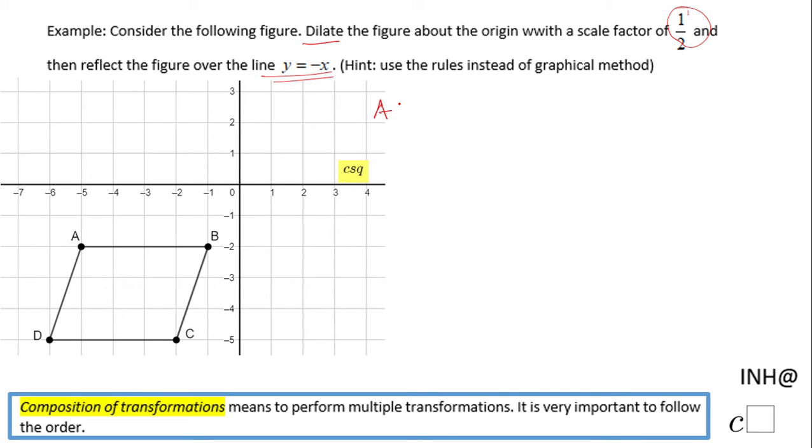We're going to start with point A, which is negative five and negative two. Because we have that dilation of scale factor of one-half and the center of dilation is the origin, we can use the rule and we're going to have negative five times one-half, which is negative five over two, and negative two times one-half, which is negative one.